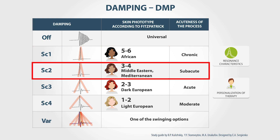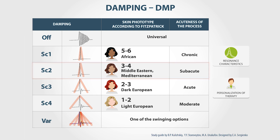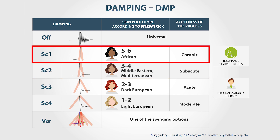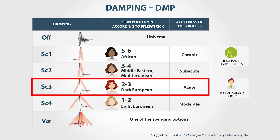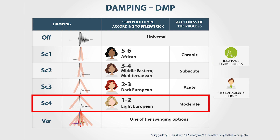We can also choose the level of Damping in accordance with the acuteness of the process: Damping 1 corresponds to a chronic process, Damping 2 to a subacute, Damping 3 to acute, and Damping 4 for an acute but long-lasting process.